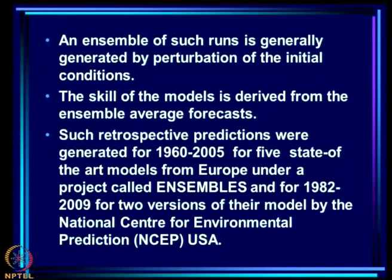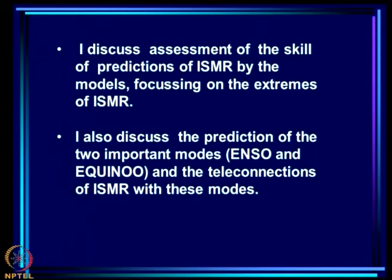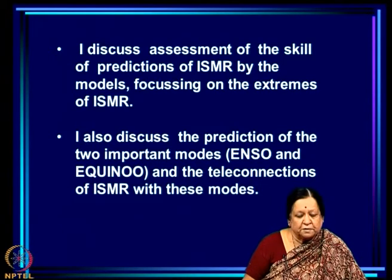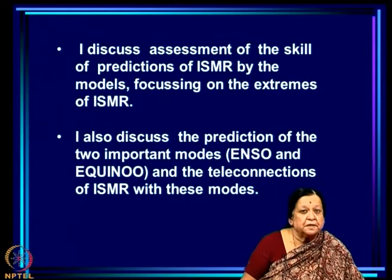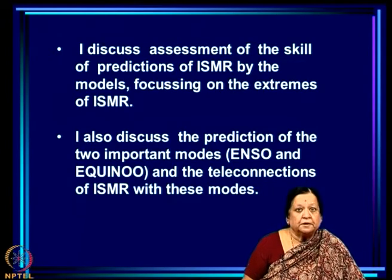Such retrospective predictions were generated for 1960 to 2005 for 5 state-of-the-art coupled ocean-atmosphere models from Europe under a project called ENSEMBLES, and for 1982 to 2009 for 2 versions of their model by NCEP — the National Center for Environmental Prediction, USA. I will now discuss assessment of the skill of predictions of ISMR by these models, focusing on the extremes to understand how good these state-of-the-art models are.